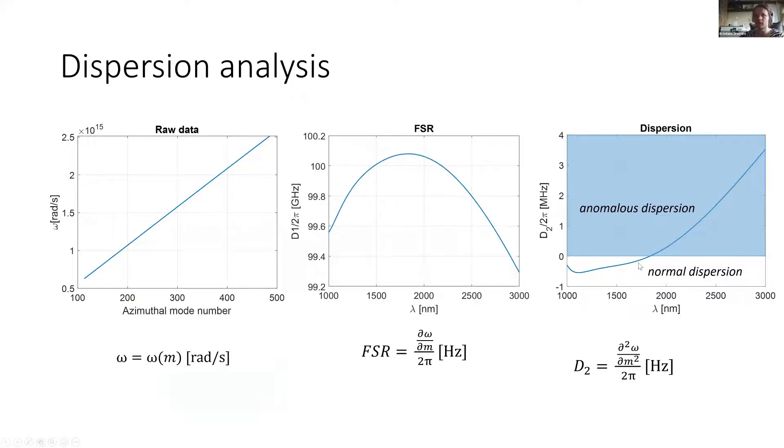The dispersion is really crucial for generation of frequency combs. Here we can see that our dispersion crosses the zero dispersion here. Every time the dispersion curve crosses zero dispersion, there will be a small comb. If the dispersion line would be like this and we would pump it here, then we would get the soliton regime.